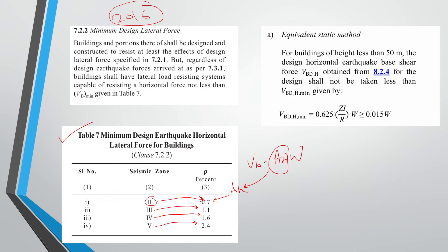That means simply the minimum AH value. Now if you see in 2025, the VBDH minimum formula is 0.625 ZI upon R into W, and that should be greater than or equal to 0.015 times the seismic weight of the structure. So this is the comparison of minimum design earthquake horizontal lateral force for the building.